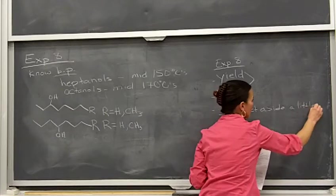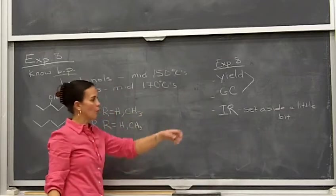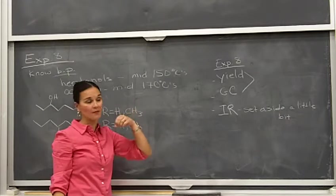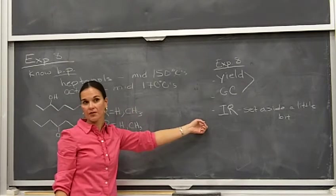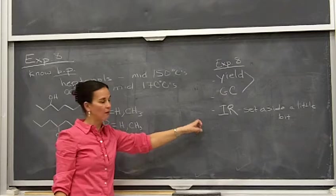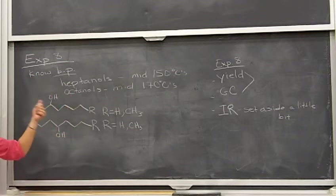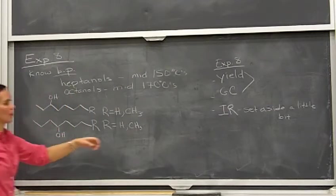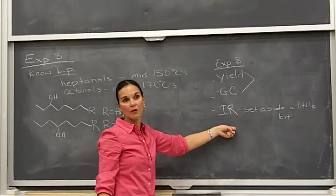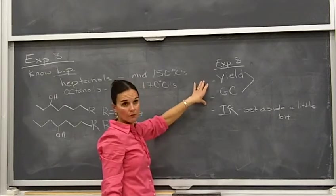If you have time at the end of the lab period, you can go and collect the IR spectrum. For IR you need only one drop. If you have a couple of drops in a vial, you've got plenty — just cap that vial and set it aside. So just set aside a little bit in a vial and go on with experiment 11. We've got two distillations to do this week, so you want to keep moving. You could always collect the IR spectrum in open lab — the IR doesn't have to happen this week, but the yield and GC do.